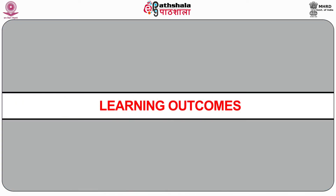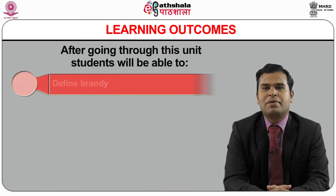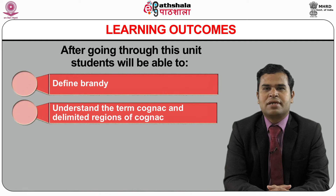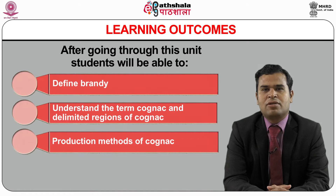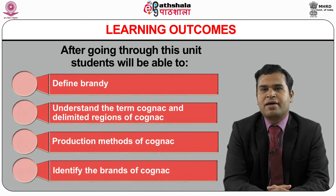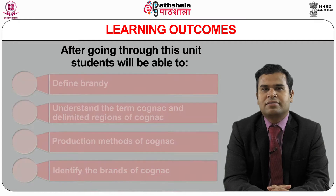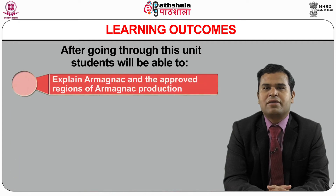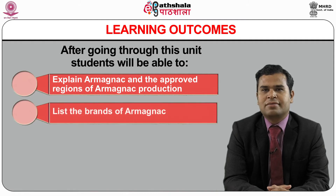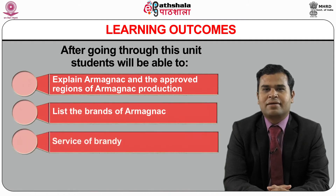After completing this module, the students will be able to define Brandy. They will be able to understand the term Cognac and delimited regions of Cognac. They will also learn production methods of Cognac and identify the brands of Cognac. They can explain Armagnac and the approved regions of Armagnac production, and list the brands of Armagnac and the service of Brandy.